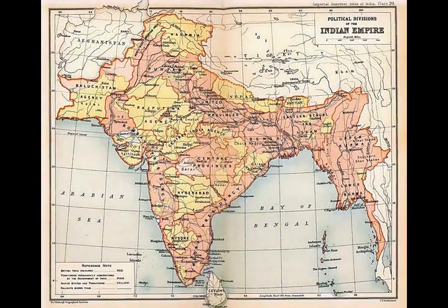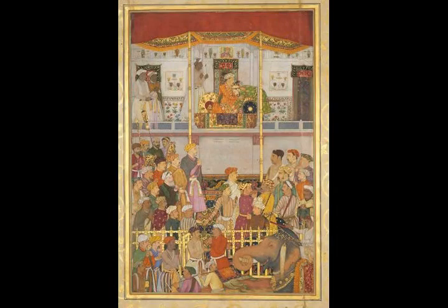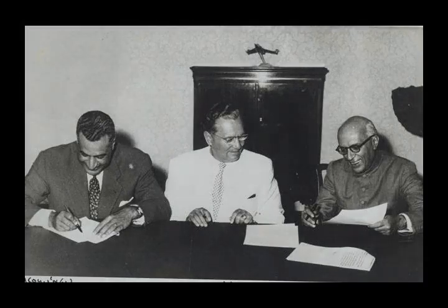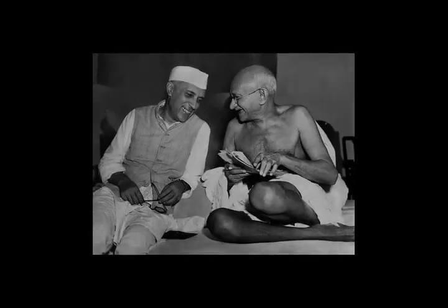Bounded by the Indian Ocean on the south, the Arabian Sea on the southwest, and the Bay of Bengal on the southeast, it shares land borders with Pakistan to the west, China, Nepal, and Bhutan to the north, and Bangladesh and Myanmar to the east. In the Indian Ocean, India is in the vicinity of Sri Lanka and the Maldives, and its Andaman and Nicobar Islands share a maritime border with Thailand, Myanmar, and Indonesia.